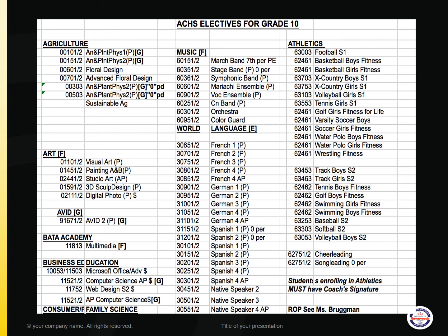Under Art, the options are Visual Art, Painting, AP Studio Art, 3D Sculpture, and Digital Photography. Next is AVID — if you are currently enrolled in AVID 1, AVID 2 would be the appropriate course selection, or if you plan to enroll in the program. For students enrolled in the BADA Academy, you would select Multimedia under BADA Academy.